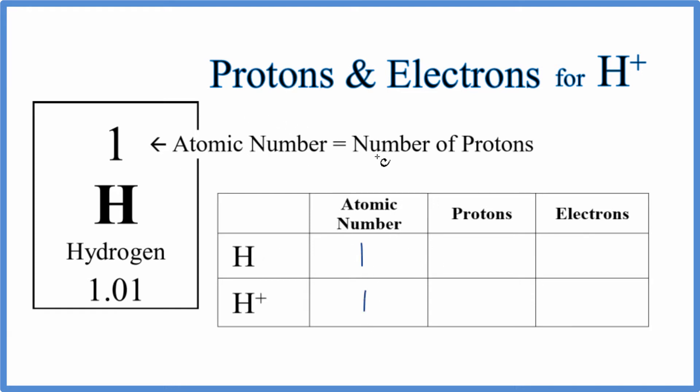And the atomic number equals the number of protons. So we know for both of these, the number of protons is going to be 1. The atomic number, number of protons, that's the same for the element and its ion.